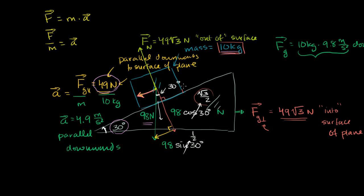We don't see this block of ice accelerating downwards into this wedge, because the wedge is supporting it. So there must be a counteracting force that the wedge is exerting on the block. That counteracting force is the normal force of the wedge on the block of ice, and that is exactly opposite to the force of gravity in this direction. These completely balance each other out in that perpendicular direction, and that's why this block is not accelerating in that direction.